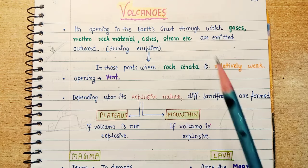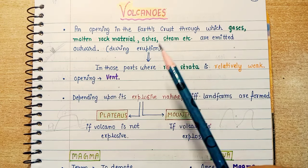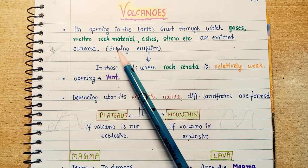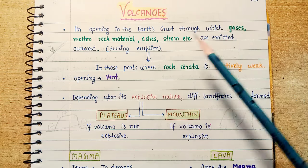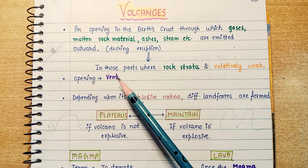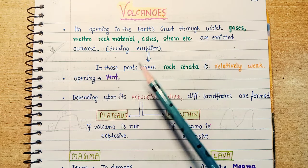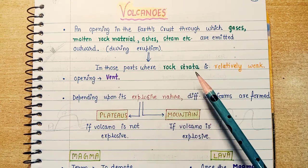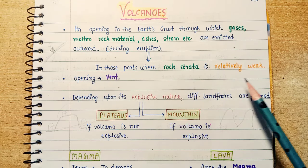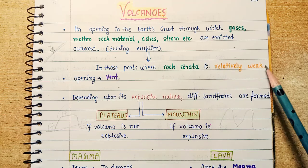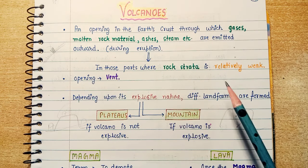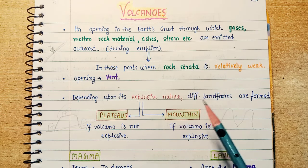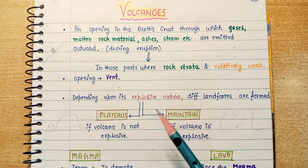To summarize: volcanoes involve molten rock material, ashes, steam, and gases, emitted through an opening called the vent. Volcanic eruptions occur where the rock structure is very weak. In terms of explosive nature, there are different landforms like plateaus and mountains.